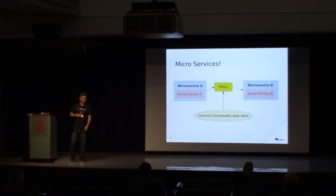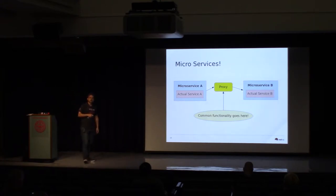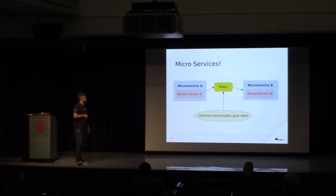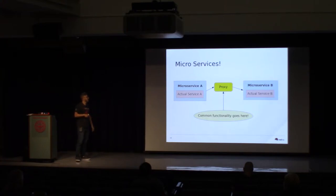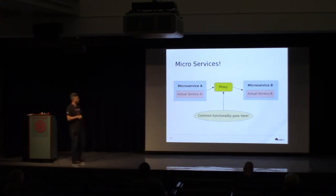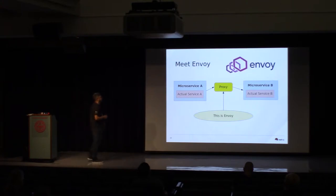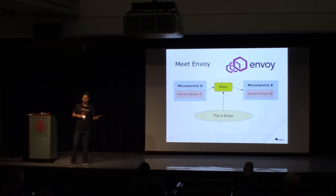So what if we took all this common functionality out of the microservices and put it into another layer, separately from your application code? That's amazing, because developers of microservices should care only about the service itself. Developers should not worry about client-side load balancing, retries, or timeouts — those are network issues. Let a proxy handle that. That's the goal of Envoy. Envoy is a proxy written specifically to fix that problem.